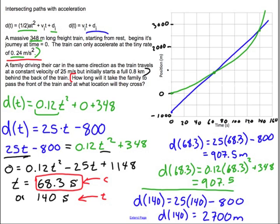If we take a step back, though, I think now we've certainly accomplished everything we wanted to. How long will it take for the family to pass the front of the train? It's right here. So there's 68.3 seconds. Where are they going to pass at? They have a shared location of 907.5 meters. And then, just because I thought it was interesting, we looked at this other location where the train has picked up speed and it's now actually passed the car. That happened at 2,700 meters. And it was at 140 seconds.